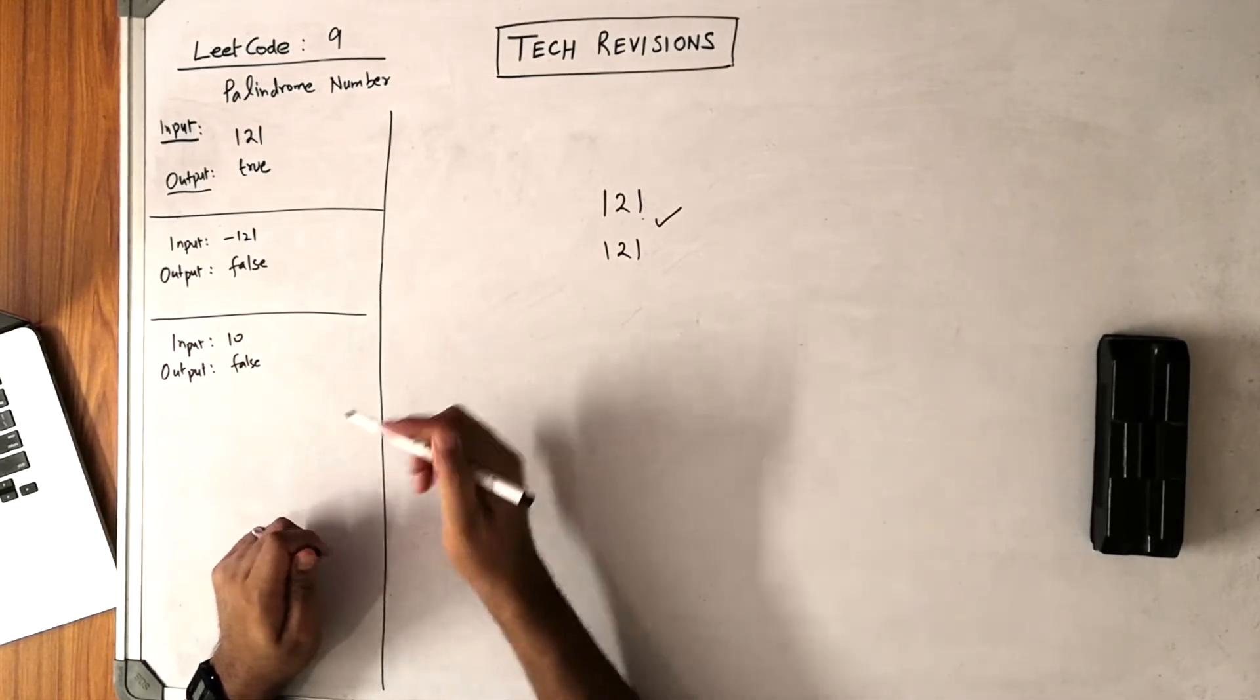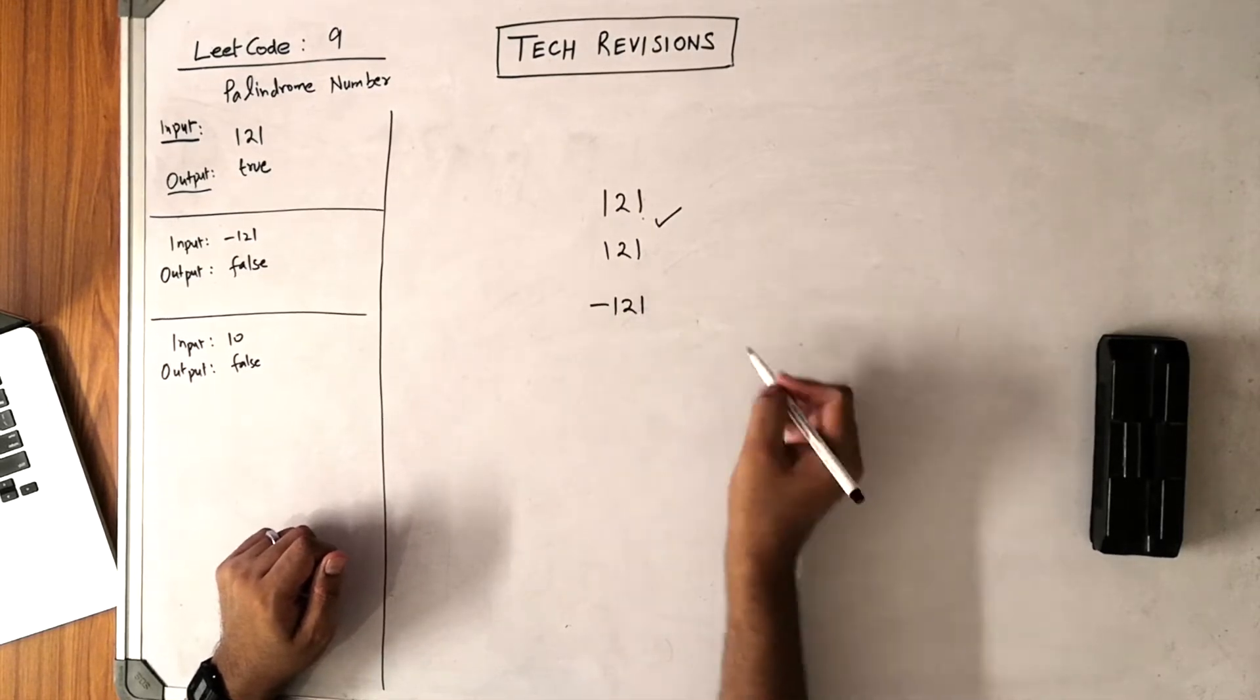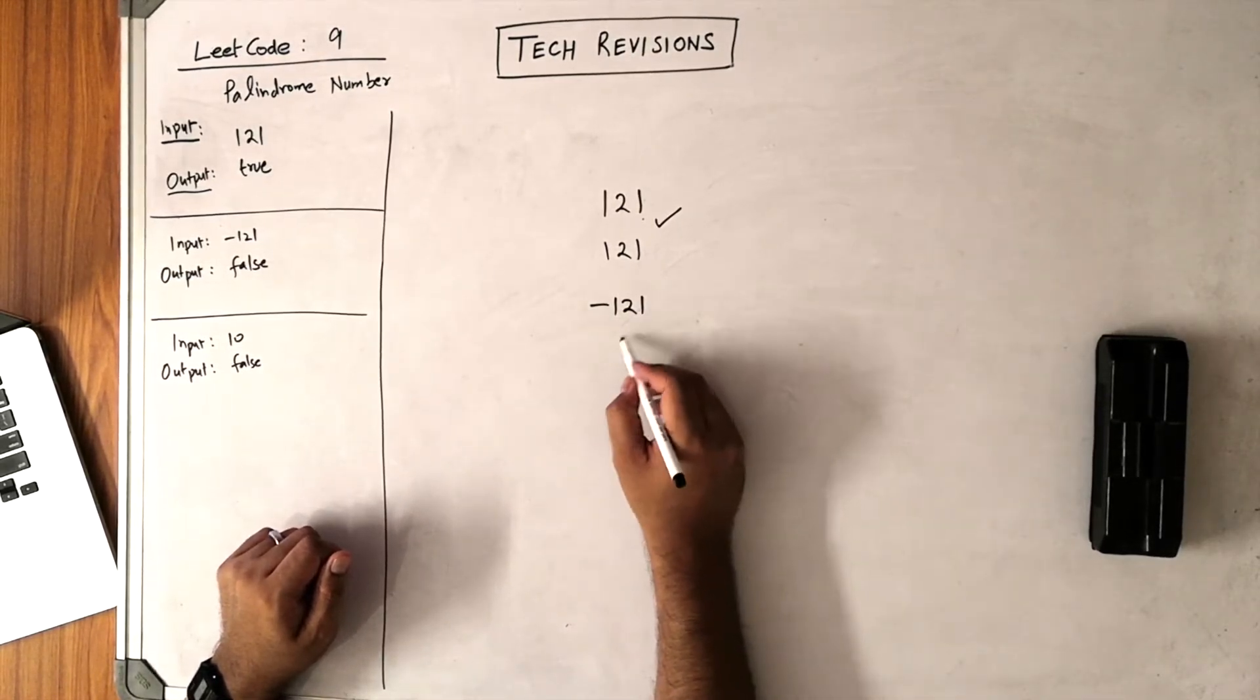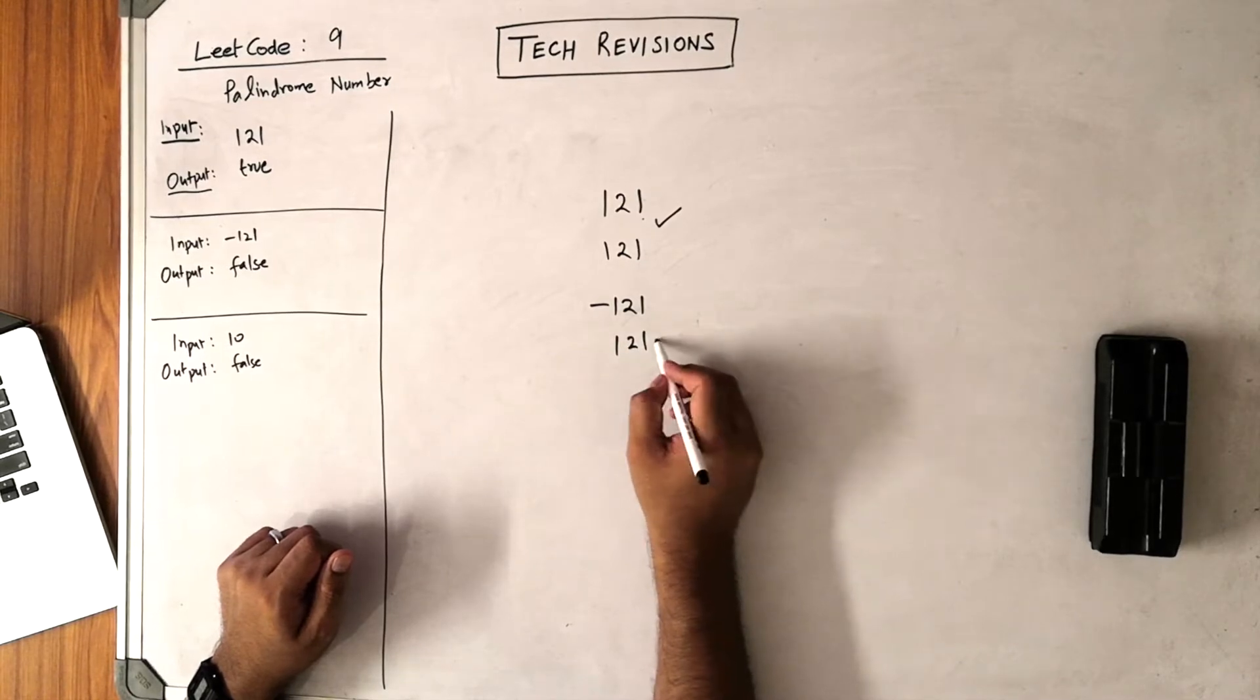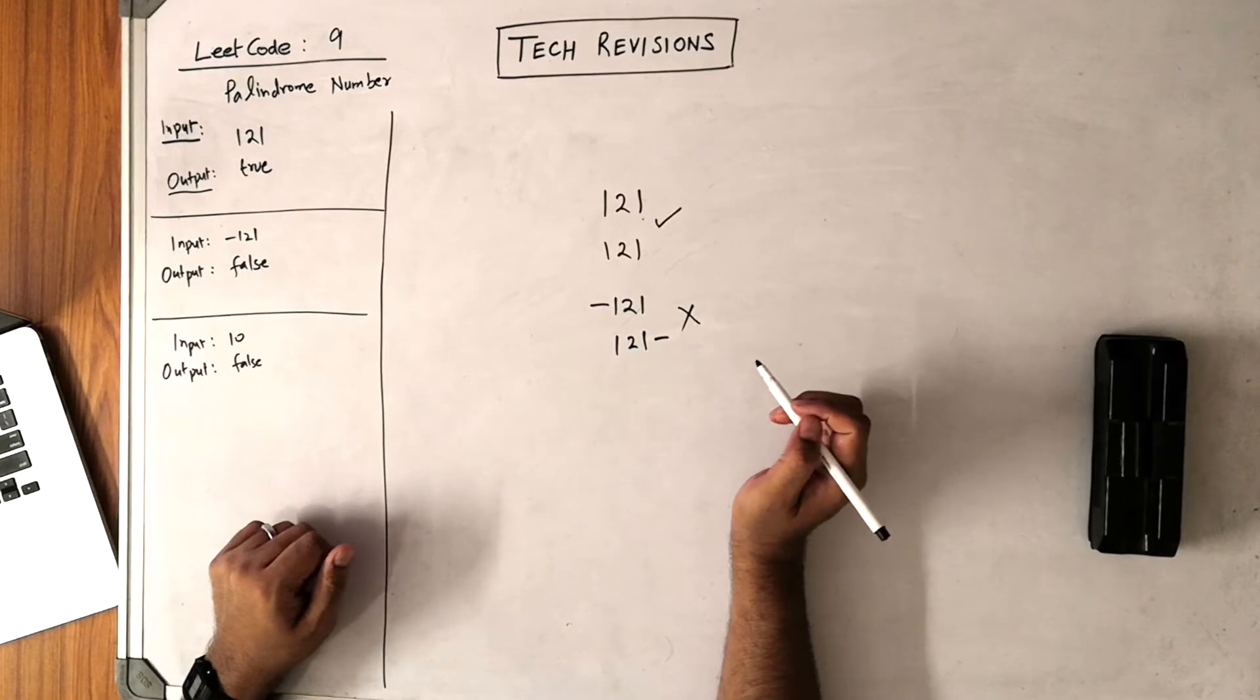Let's look at another example. The other input is -121. When you read it from the right-hand side, it will be one, two, one, and then minus will come here. It's not even a valid number, and hence it is not a palindrome.